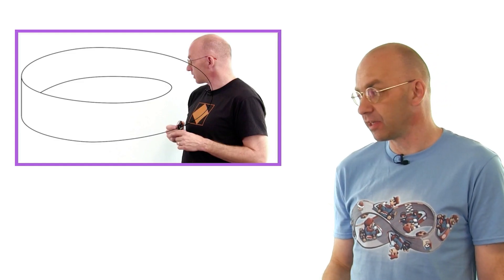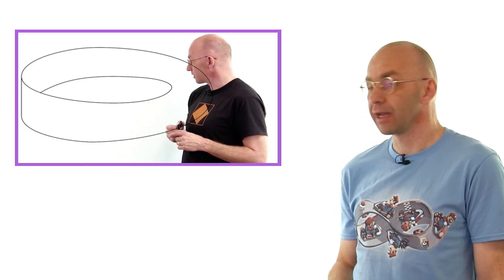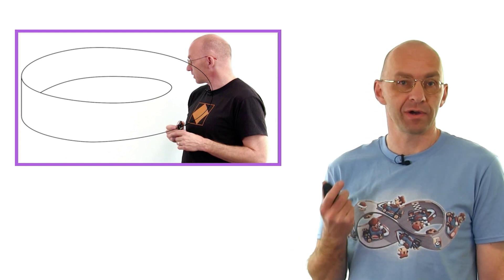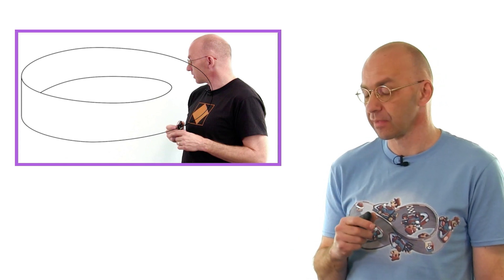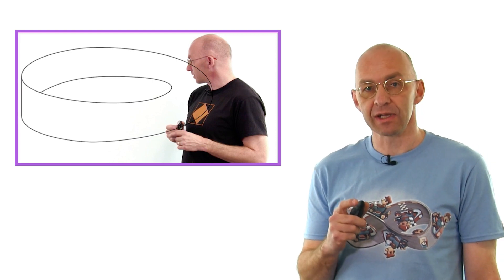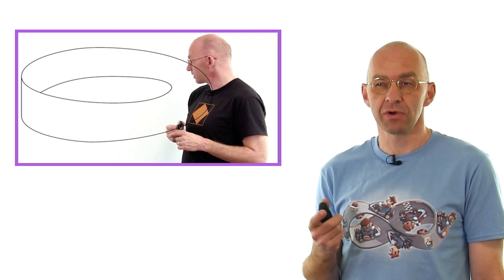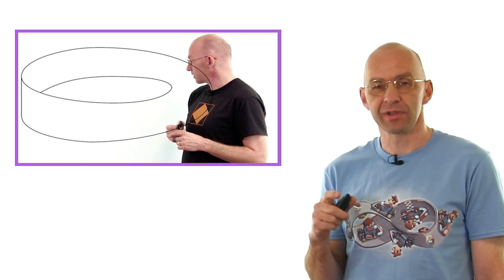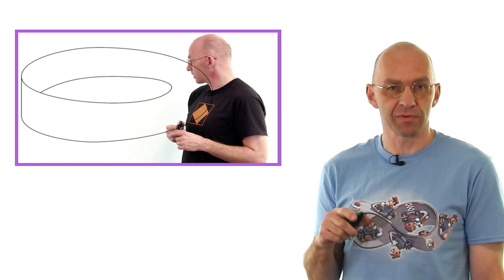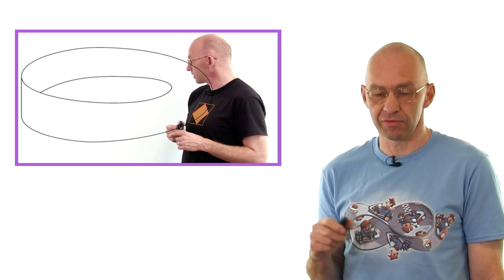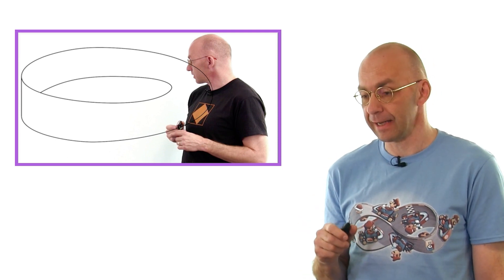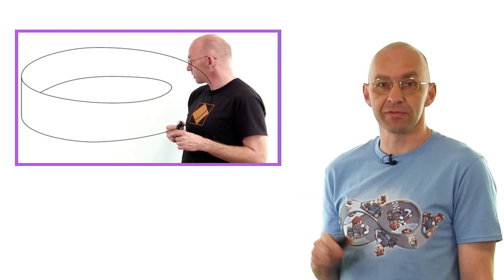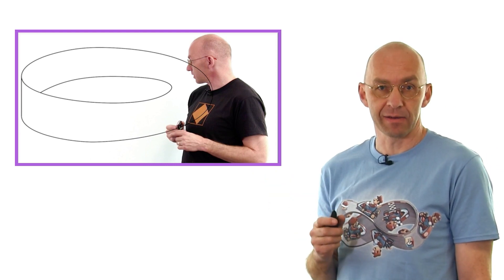Two weeks ago we ran a video on Klein bottles and putting Rubik's cubes into Klein bottles, and we got to talk about Möbius strips. One of the things that I said about Möbius strips caused a lot of controversy. People were unsure about what I was saying, so I had to reply to a lot of comments. Today I'll start out with that part of the video and explain it.